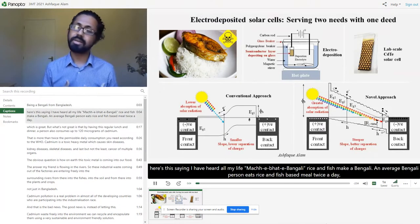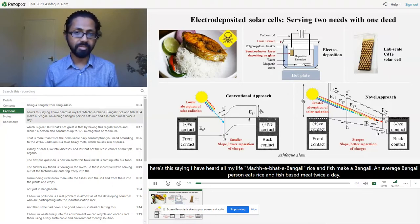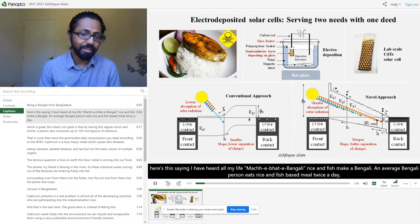Being a Bengali from Bangladesh, here's this saying I have heard all my life. Machi Bhate Bhangali. Rice and fish make a Bengali.